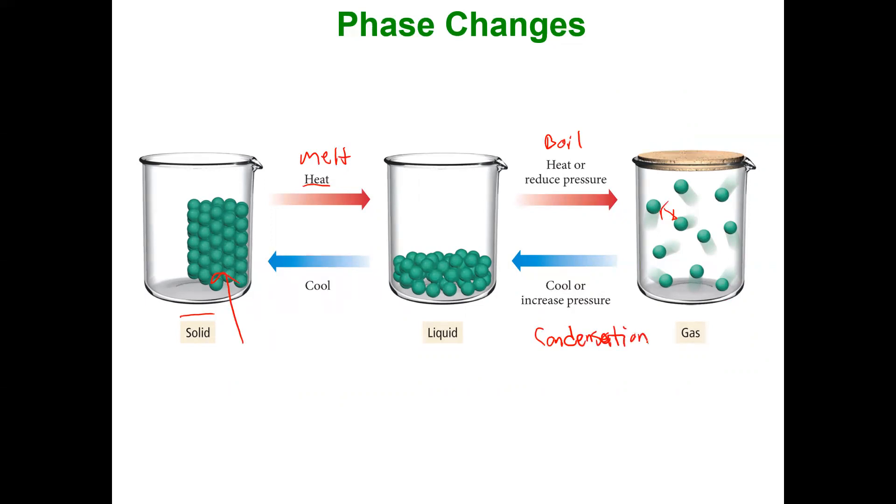it's going to be a similar amount of energy for the same amount of substance. But instead of boiling, we might call this condensing, or condensation. And then from a liquid to a solid, we would call that freezing. And going in this direction, because we're applying heat, this would be considered an endothermic process. Why is it endothermic? Because the heat that we're adding is positive.